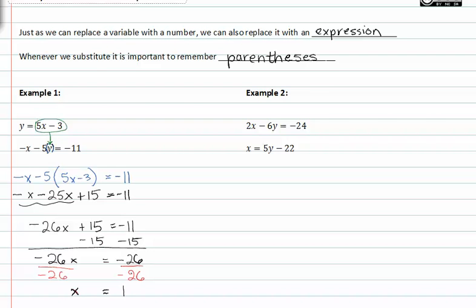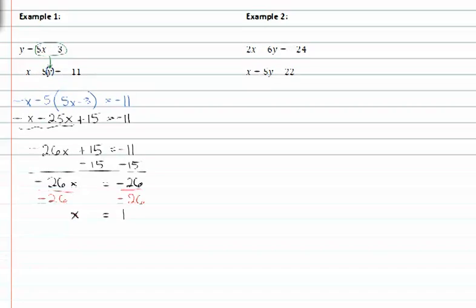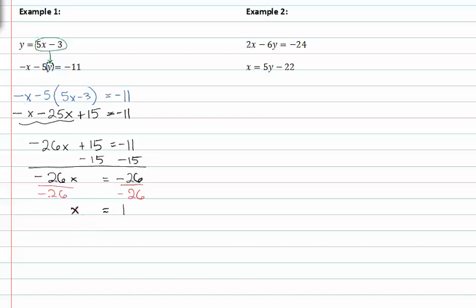Now that we know what x is equal to, we can then take x and substitute it back into the original equation to find the value for y. So my original equation was y equals five x minus three, take one and substitute it in for x. So y is equal to five times one minus three, so y is equal to five minus three or two.